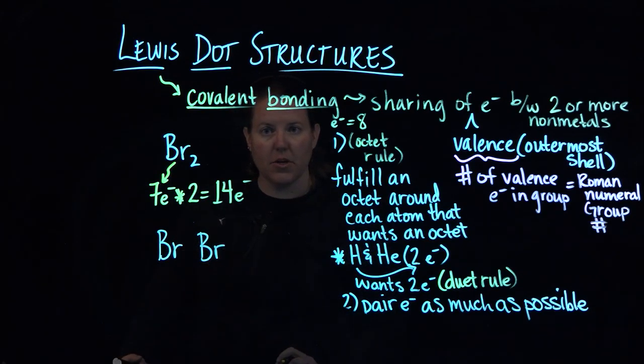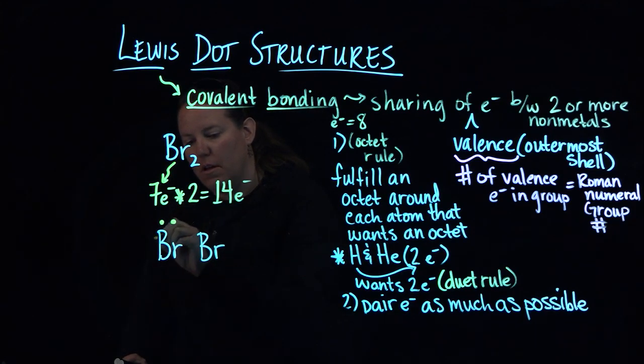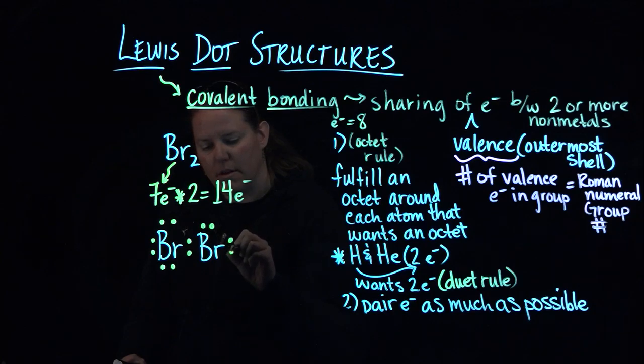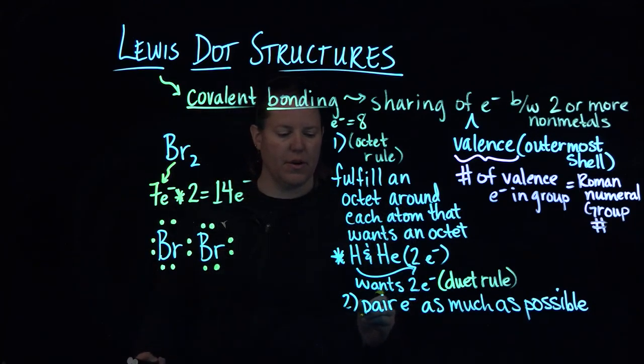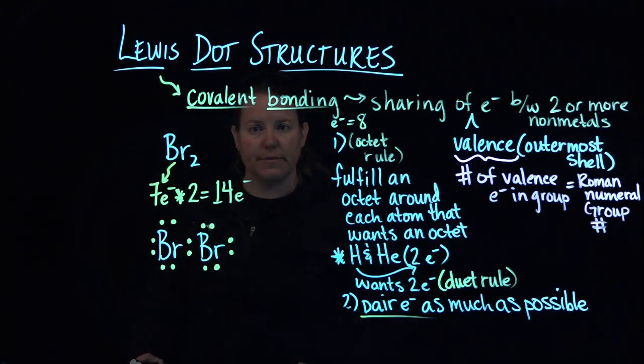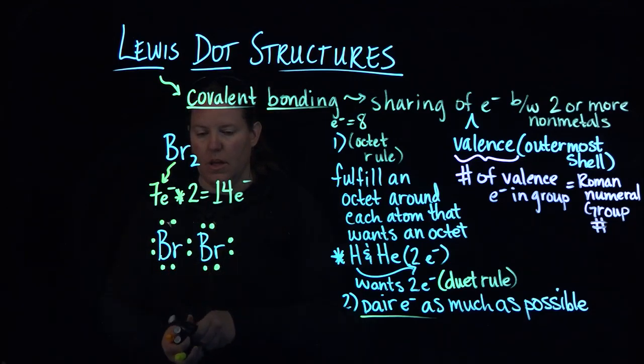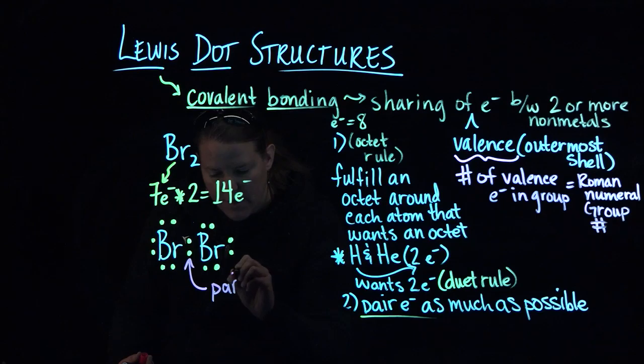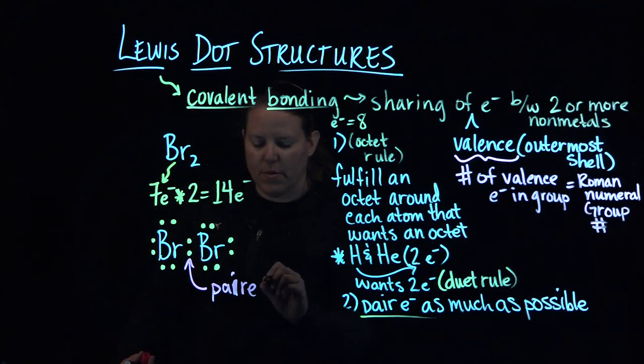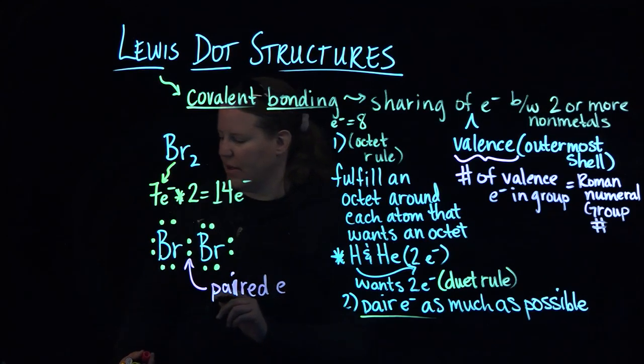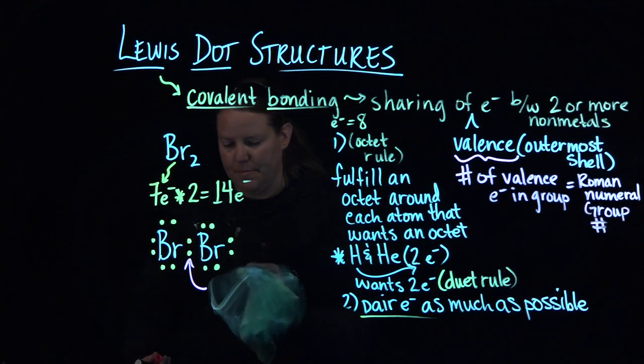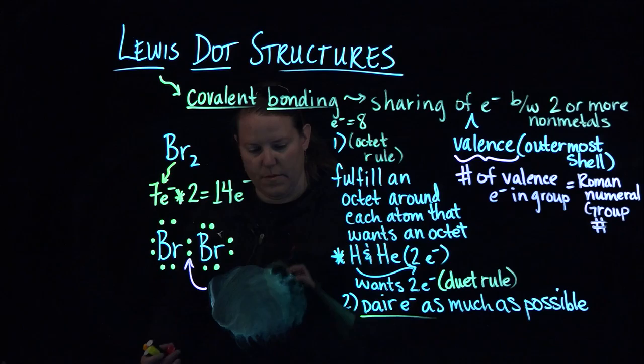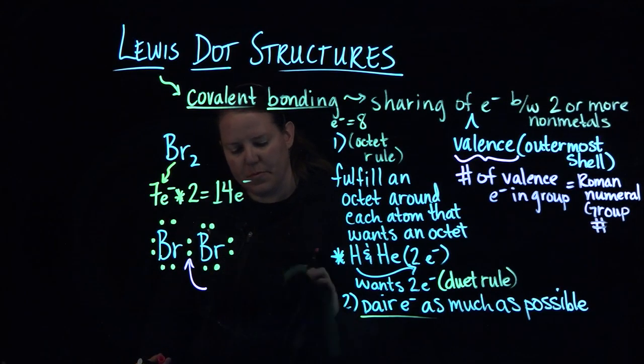All right, and now I'm going to fulfill the octet rule for everything that wants an octet. Since I have no H's or He's, I'm going to assume that these Br's want an octet. So here we go: two, and I'm just going to do that by filling the sides. Two, four, six, eight, ten, twelve, fourteen. And I just fill in pairs until I'm pairing electrons as much as possible. I fill them in pairs until I count out 14. Now if I told you that these electrons in between the two elemental symbols are called paired electrons, you can call them a paired, well all of these are paired electrons. So really what these are called is they're called a shared pair or a bonded pair.